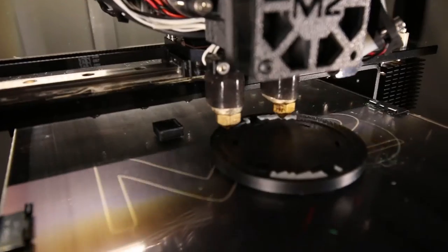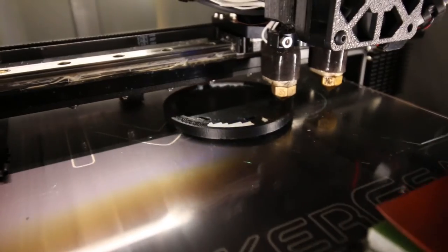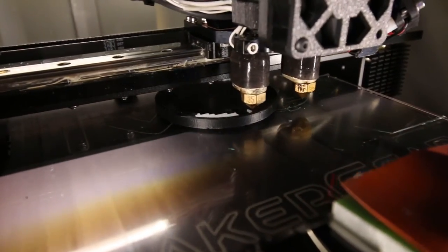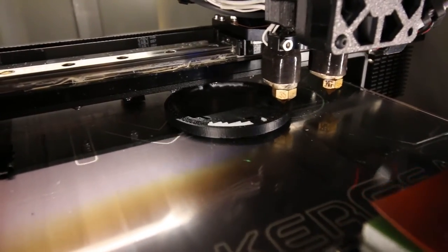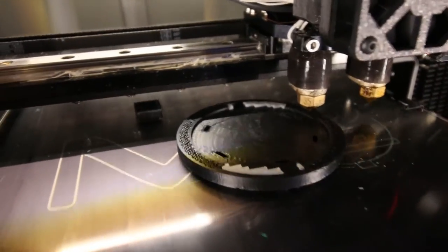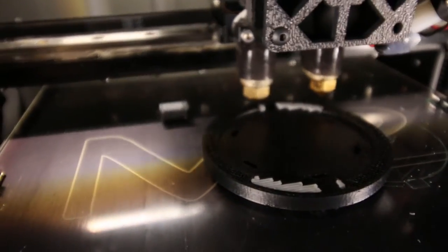So I decided to use dual extruder again. This time I'm going to use ABS as the base material, but I'm going to use HIPS - high impact polystyrene - for the support material. The neat thing about HIPS is you can dissolve it away.